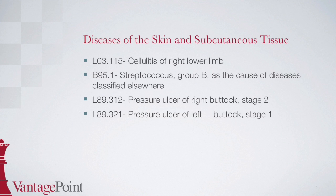The next code is L89.312, pressure ulcer of right buttock, stage 2. To locate this code, start at ulcer in the alphabetic index, then find decubitus indented below, where there is an instructional note stating 'see ulcer, pressure by site.' After following these directions, find stage 2 under pressure ulcer, then the site, which is the buttock. Documentation states gluteal region, which equates to buttock. This points to L89.3 with a checkbox indicating more digits are required. In the tabular, subcategory L89.3 is for pressure ulcer of the buttock. The subcategory for right buttock is L89.31, then we need a sixth character of 2 to indicate stage 2, giving us a final code of L89.312.